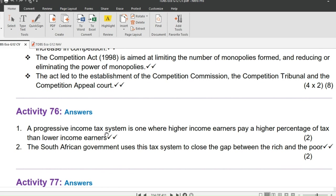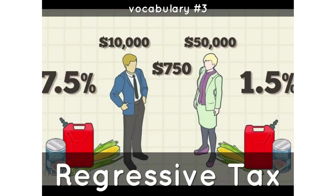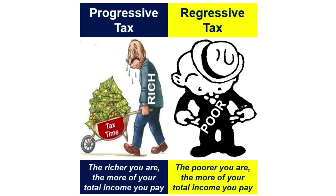Remember it is the tax system used in South Africa and in many parts of the world. The opposite is called a Regressive Income Tax System, which means charging low-income earners more tax than high-income earners — it imposes a greater burden on the poor than on the rich. Which tax system do you think is better? Put your response in the comment section down below.